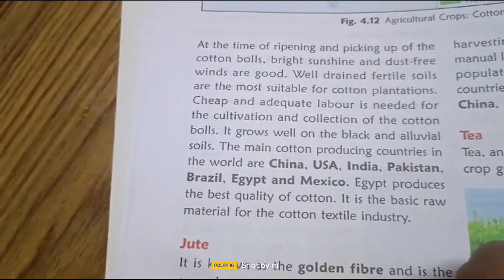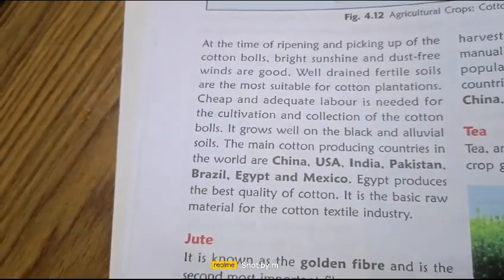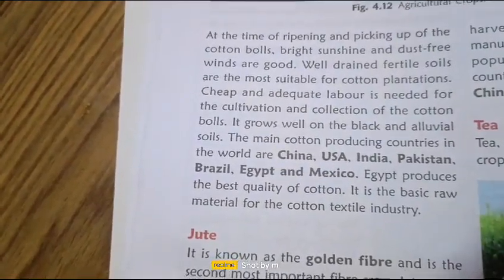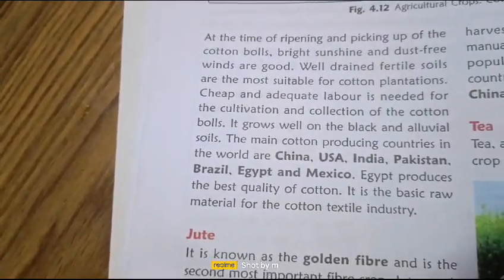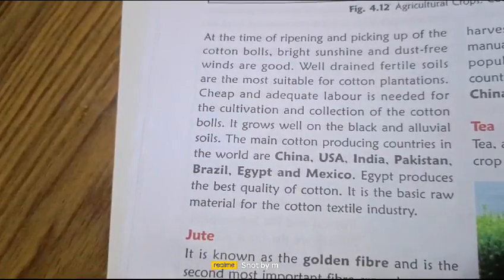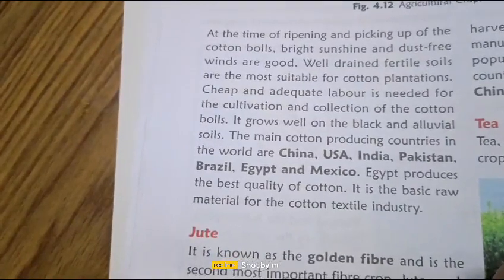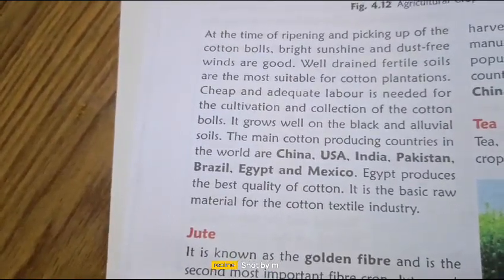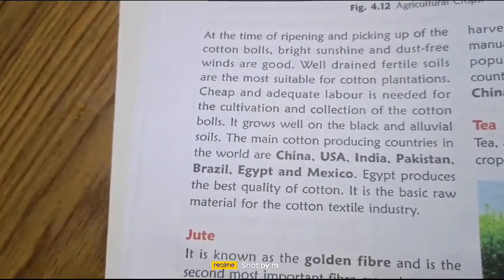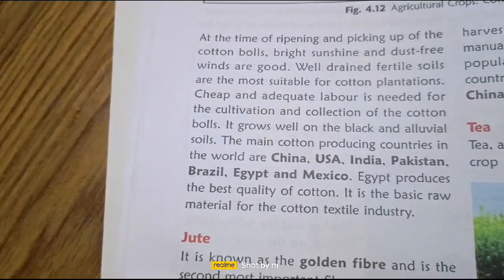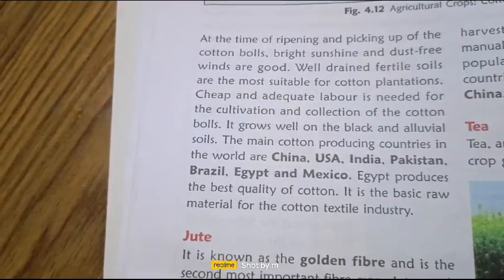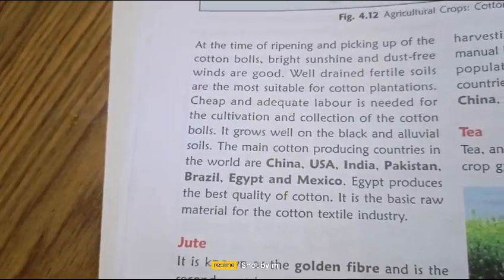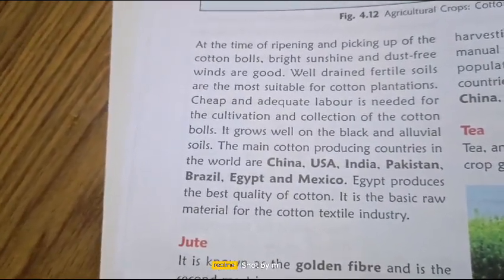The main cotton-growing countries in the world are China, USA, India, Pakistan, Brazil, Egypt, and Mexico. Egypt produces the best quality of cotton. Cotton is the basic raw material for the cotton textile industry.